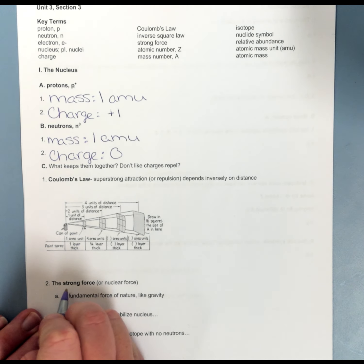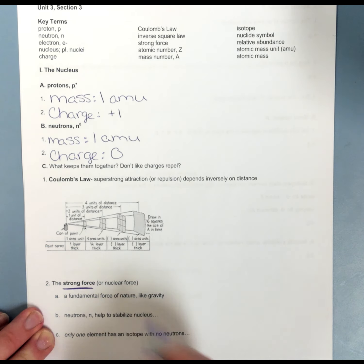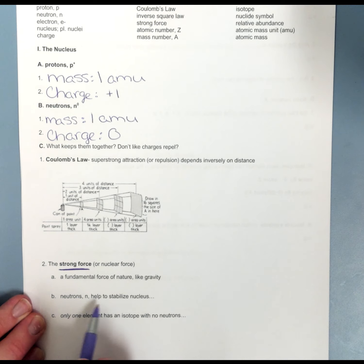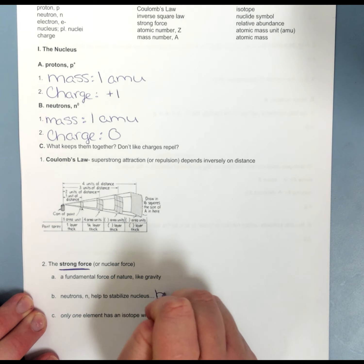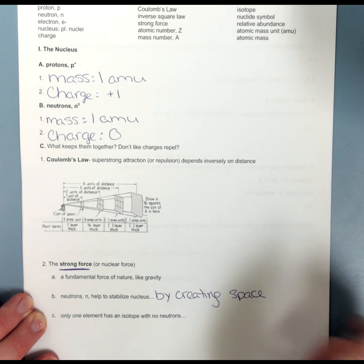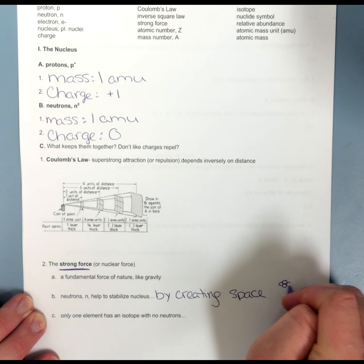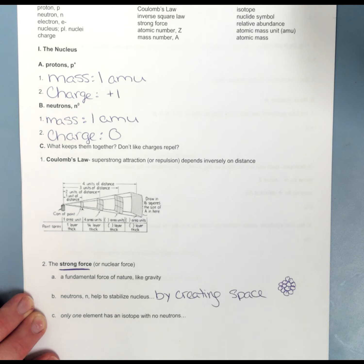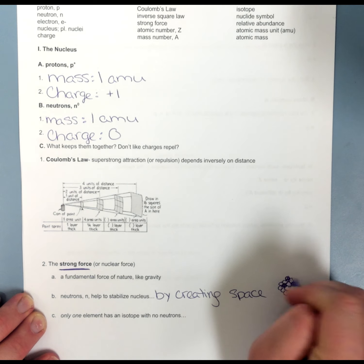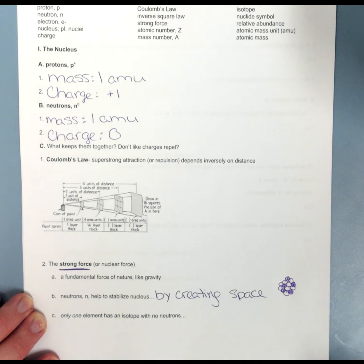What I want to focus on is the nucleus is held together by what we call the strong force. That's the nuclear force. It's a fundamental force of nature, like gravity. And my neutrons also help to stabilize the nucleus by creating space. If I'm looking at my nucleus in particular, I have all of these protons and neutrons at the center of my atom. Obviously, it's much smaller. I have all of these positive parts, but my neutrons are creating space in between my protons, which keeps them further apart, which lessens their repulsion.